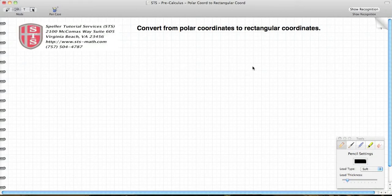Welcome back to Speller Tutorial Services. Today we're going to talk about conversions from polar coordinates to rectangular coordinates. Polar coordinates are found with the ordered pair (r, θ), where r is a radius and θ is the angle created by that radius.